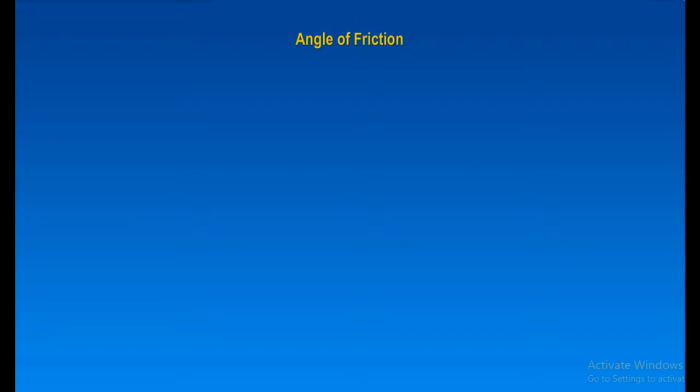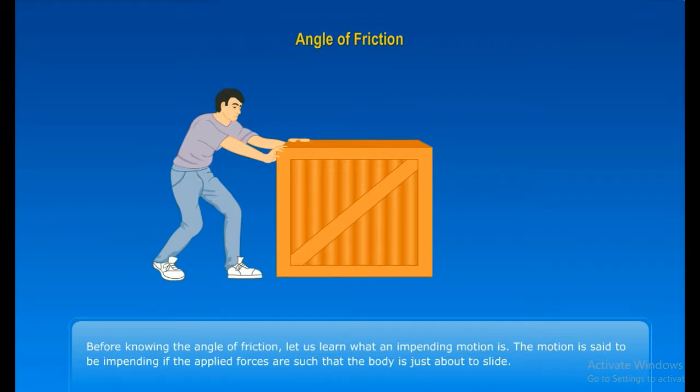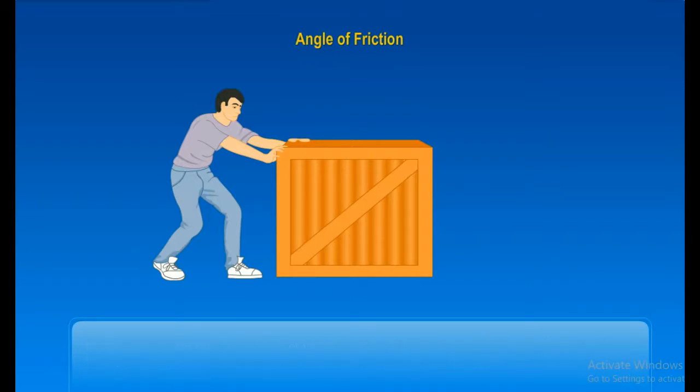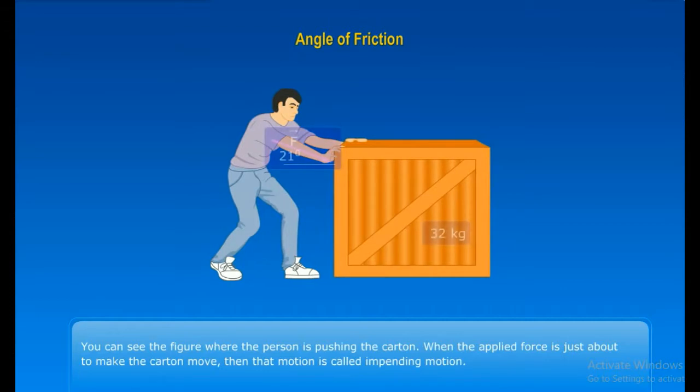Let's discuss the angle of friction. Before knowing the angle of friction, let us learn what an impending motion is. The motion is said to be impending if the applied forces are such that the body is just about to slide. Look at the figure of a man pushing the carton. When the applied force is just about to make the carton move, then that motion is called an impending motion.